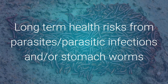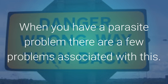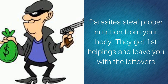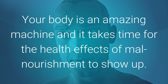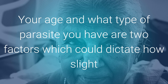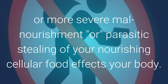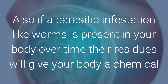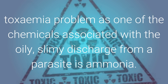Long-term health risks from parasites, parasitic infections and stomach worms. When you have a parasite problem, there are a few associated problems. Parasites steal proper nutrition from your body — they get first helpings and leave you with the leftovers. Your body is an amazing machine and it takes time for the health effects of malnourishment to show up. Your age and the type of parasite you have are two factors which could dictate how slight or severe the malnourishment affects your body. Also, if a parasitic infestation is present over time, the residues will add a chemical toxin — one of the chemicals associated with the oily, slimy discharge from the parasite is ammonia.